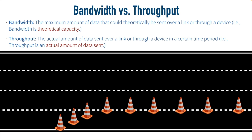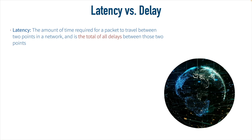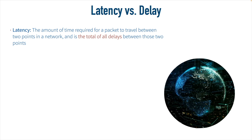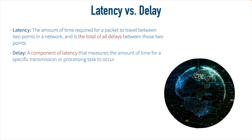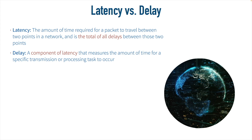To sum up: bandwidth is our theoretical maximum capacity of a link; throughput is how much data is actually sent over that link in a certain period of time. Next, let's think about how long it takes to get from one point in the network to another — specifically latency and delay. Latency is the total amount of time required for a packet to go from one point on the network to another. That latency is made up of multiple delay components, and we add up all the different delays to get our total end-to-end latency.